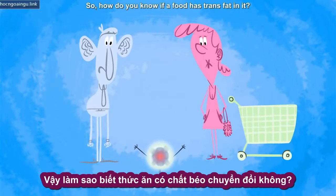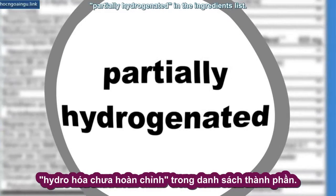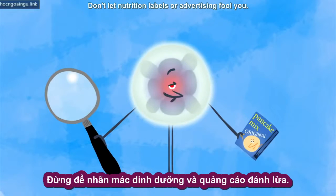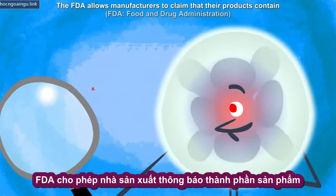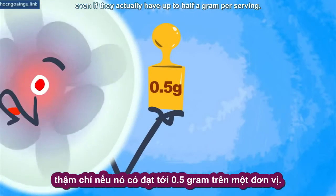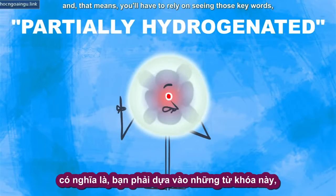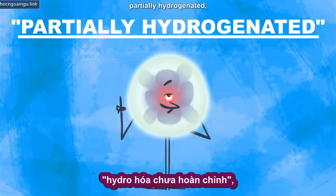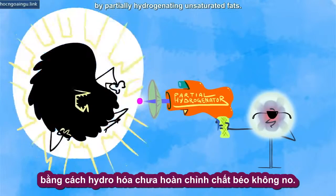So how do you know if a food has trans fat in it? The only sure way to know is if you see the words "partially hydrogenated" in the ingredients list. Don't let nutrition labels or advertising fool you. The FDA allows manufacturers to claim their products contain zero grams of trans fat even if they actually have up to half a gram per serving. There are no hard and fast rules about how small a serving can be, so you'll have to rely on seeing those keywords — "partially hydrogenated" — because that's how trans fats are made, by partially hydrogenating unsaturated fats.